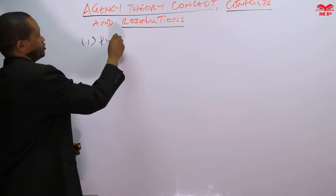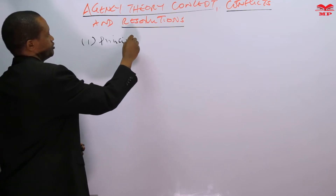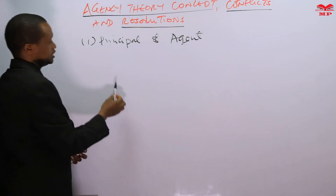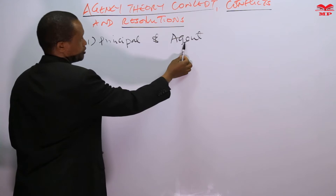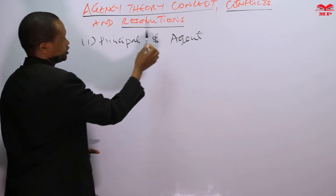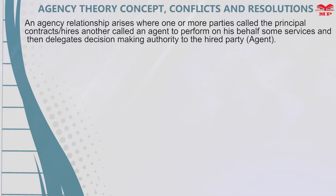In an agency relationship there are two parties: the first one is the principal, and the other party is the agent. The principal delegates his authority to the agent, who performs duties or functions on behalf of the principal. That is what we mean by an agency relationship.